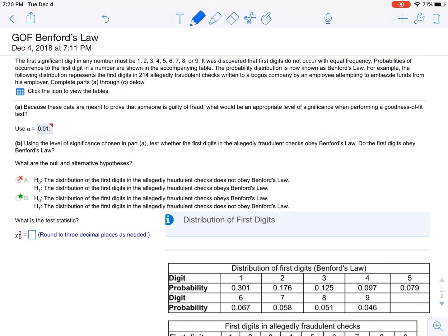So the null will always be that it conforms to some distribution - either it's a uniform distribution, binomial distribution, Benford's distribution, Poisson, whatever. The alternative is that it's not.